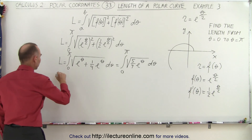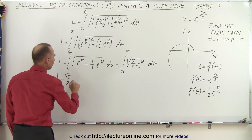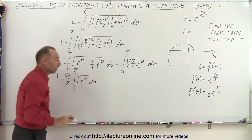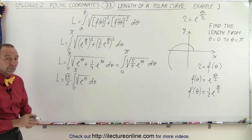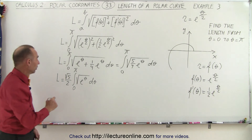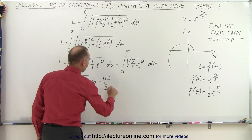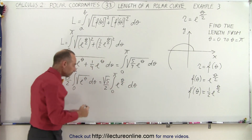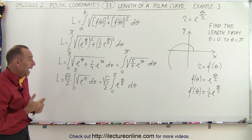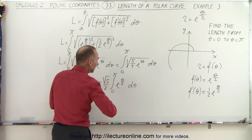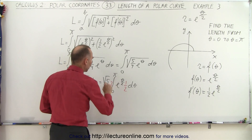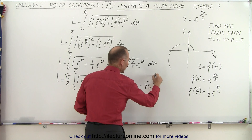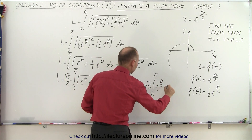We can pull out the 5 fourths, so we can say the length is equal to the square root of 5 over 2 times the integral from 0 to pi of the square root of e to the theta times d theta. The square root of e to the theta would be e to the theta divided by 2, because the square root is like 1 half. So we get the square root of 5 divided by 2 times the integral from 0 to pi of e to the theta divided by 2, d theta. To integrate that, we need a 1 half in front, so we multiply by 2, and the 2's cancel, giving us the square root of 5 times the integral from 0 to pi of e to the theta divided by 2 times 1 half d theta.